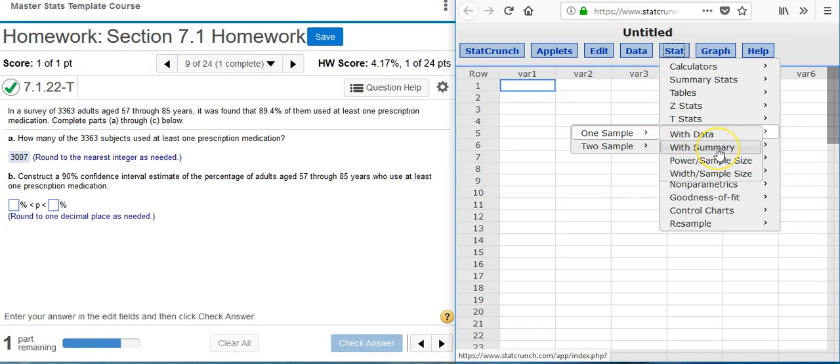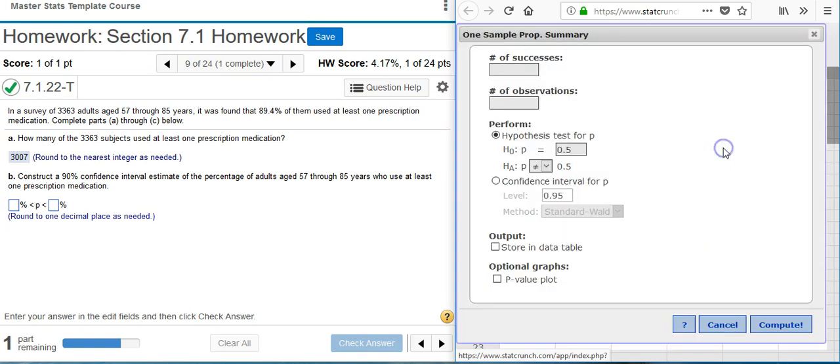And then I want to select With Summary because I don't have actual data to use, I only have summary statistics. Now here in my options window, first thing I need to do is determine the number of successes. This is simply the proportion that they're going to give you in the actual problem statement, but you need to enter it as a whole number. We calculated that in the previous part of the problem: 3,007.